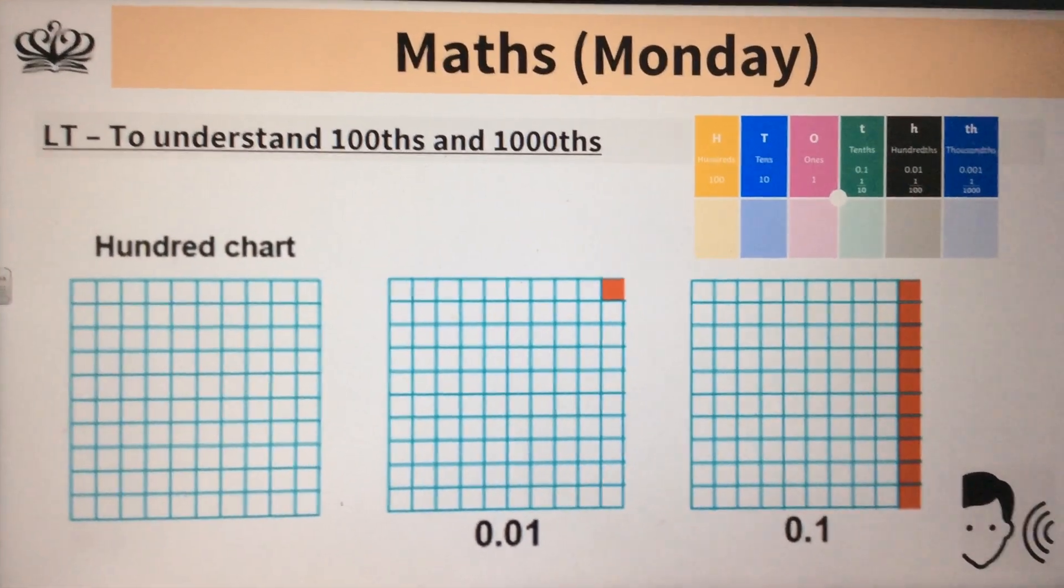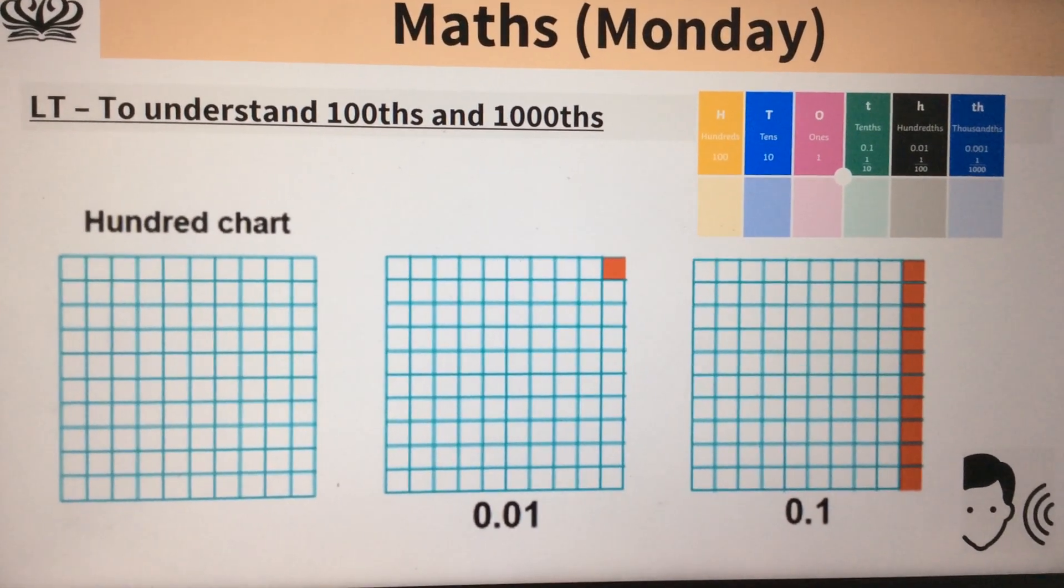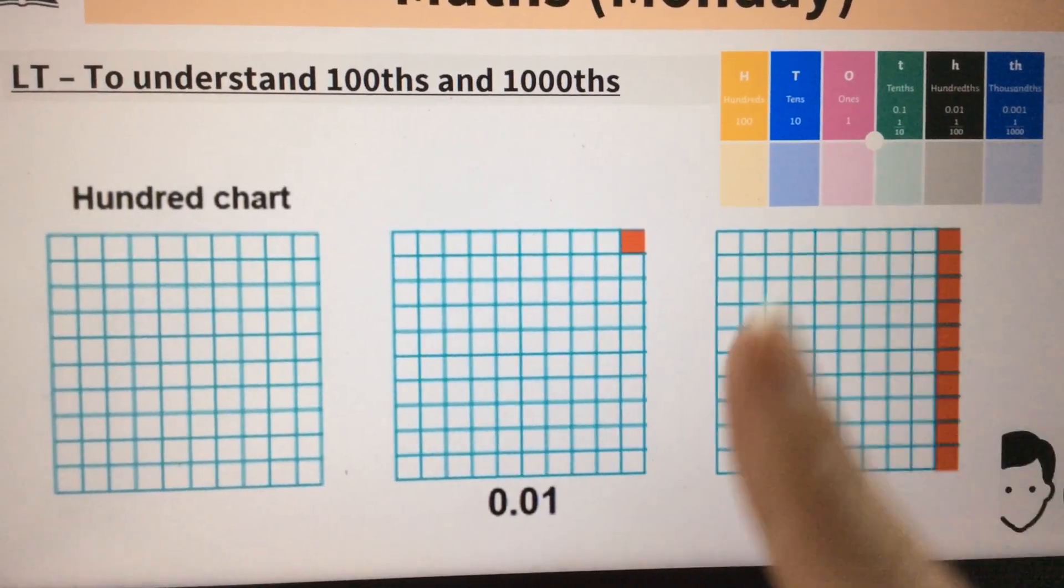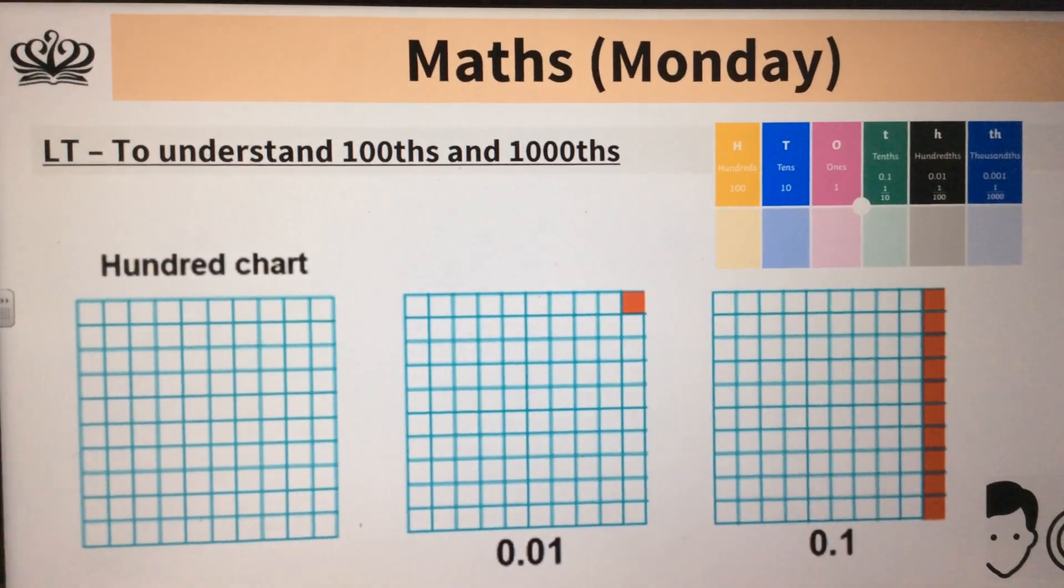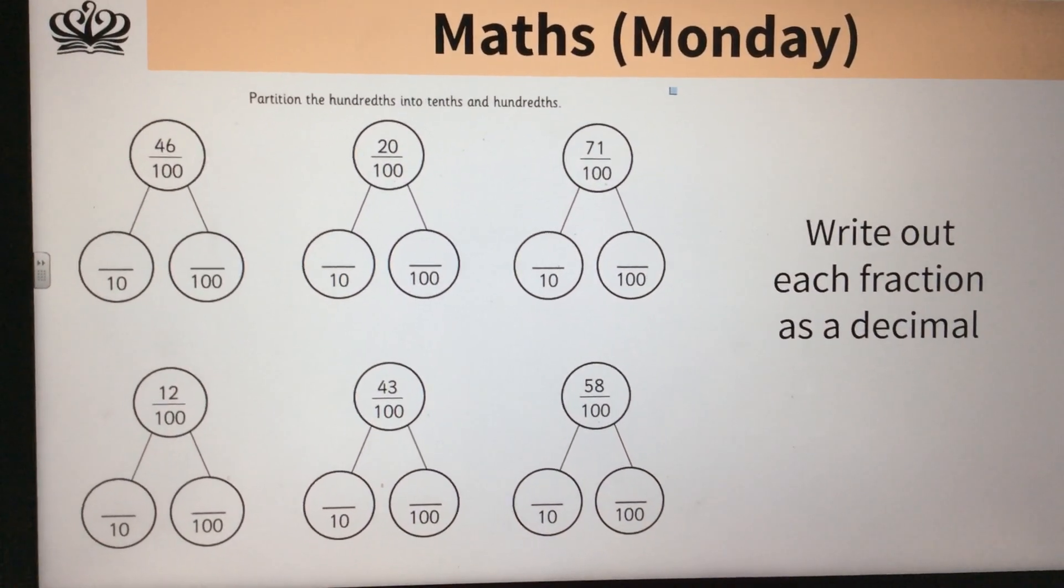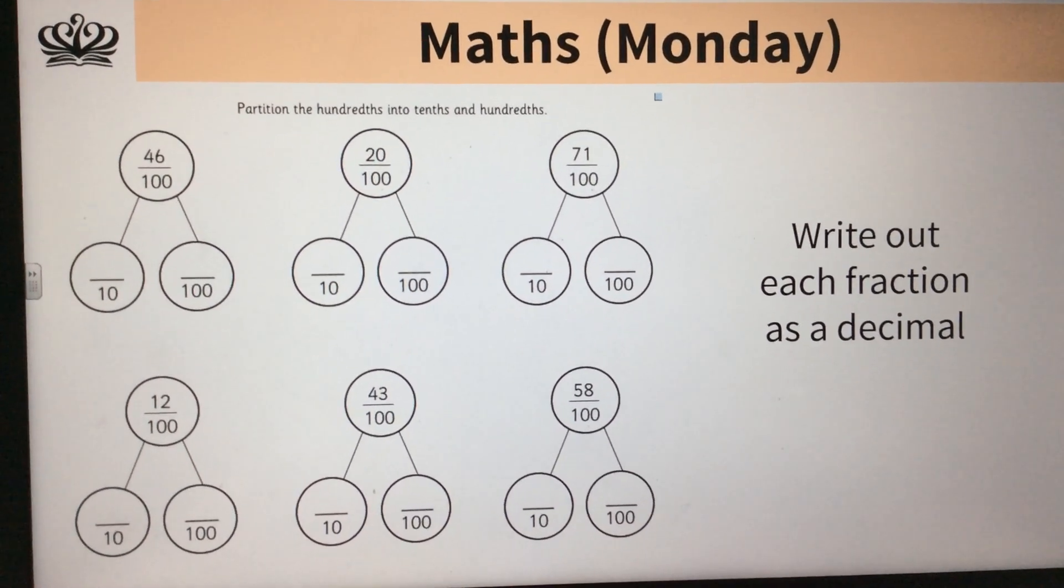If you're not sure today, go back and have a look at the hundredth square, look at the place value chart as well, and use those visuals to help you. Now your first questions, you've got these to be partitioning. We did a bit of this last time so this shouldn't be too difficult.